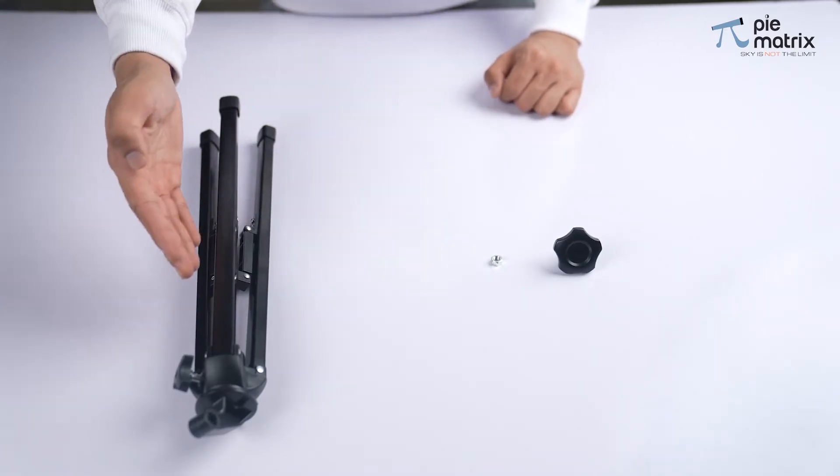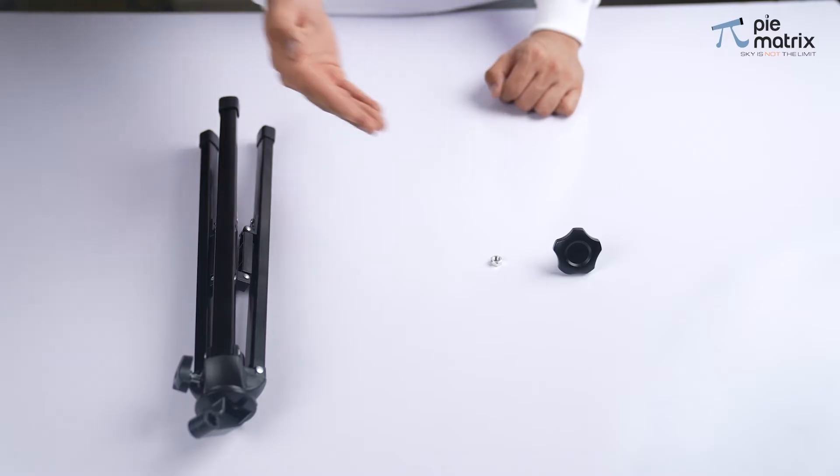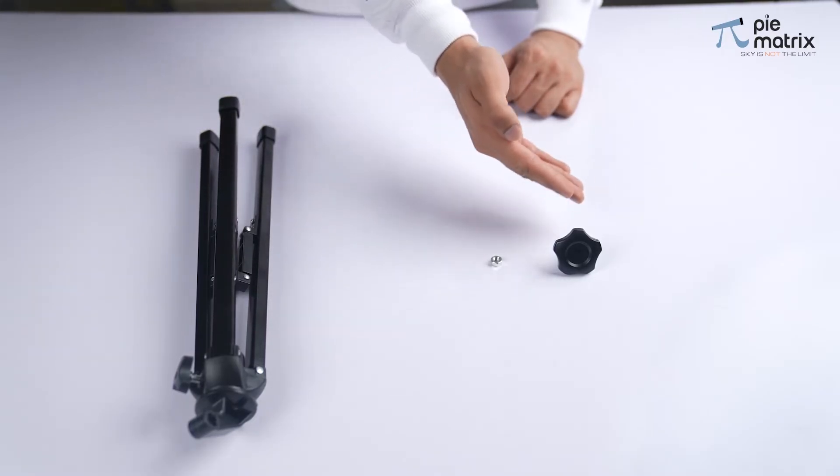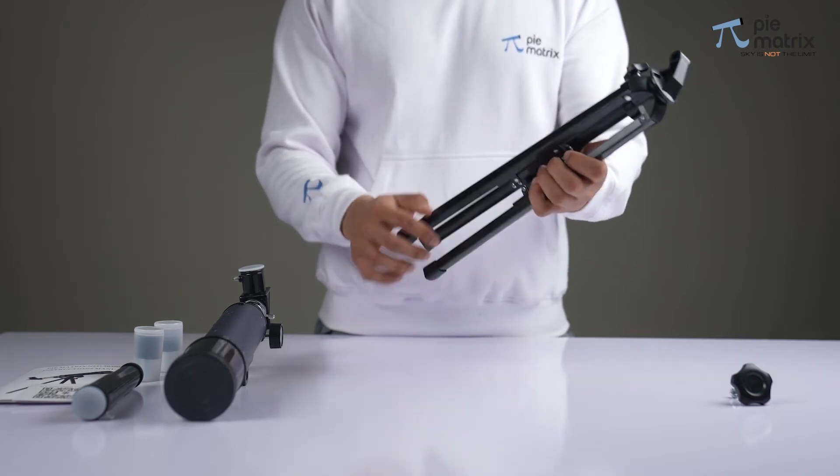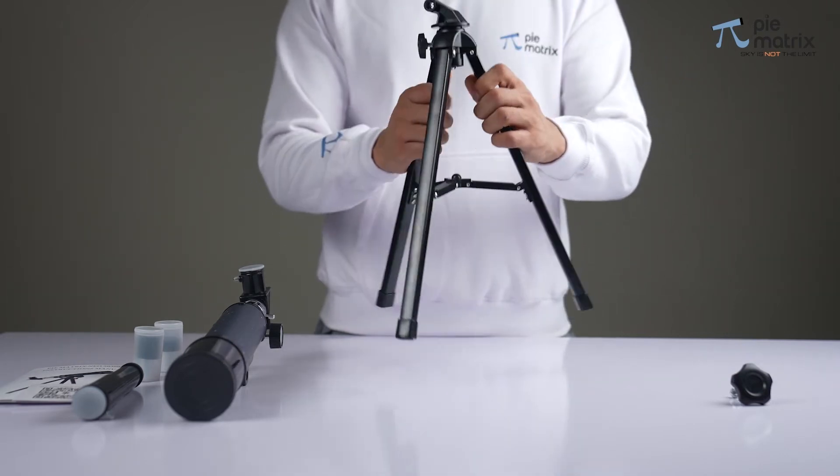First we connect the tabletop tripod using these knobs and screws. Open the tripod and let us proceed with the telescope installation.